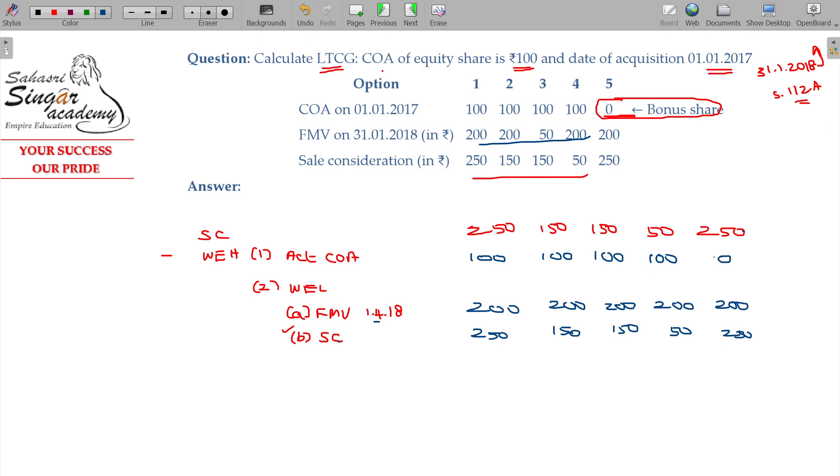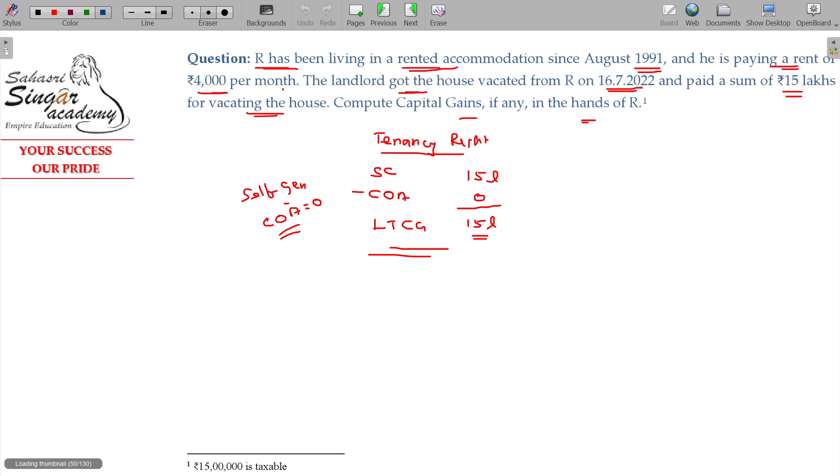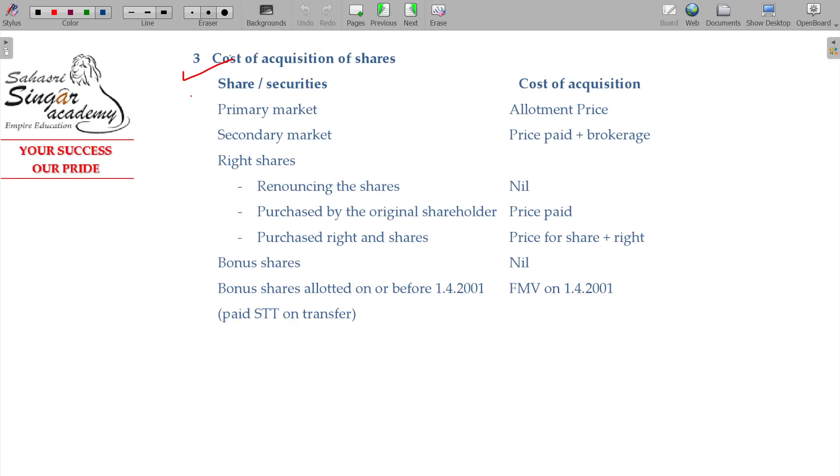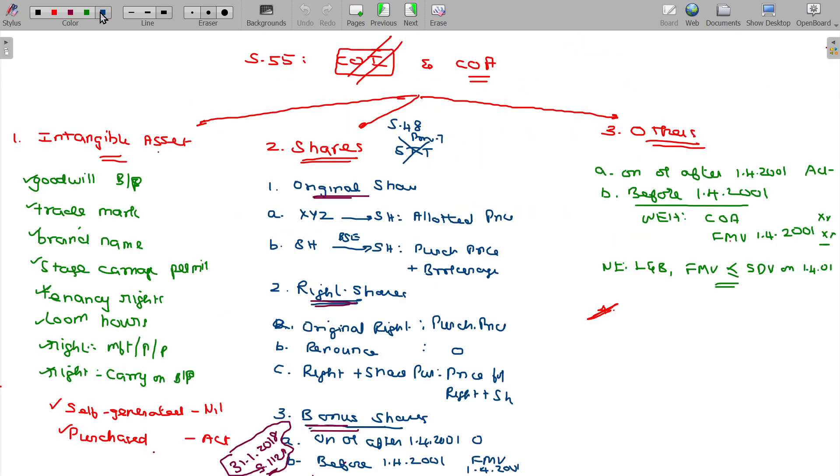And 250, in that case the cost of acquisition being zero, bonus share. Bonus share - if it's a bonus share, Section 112A is applicable if the share issued as bonus share issued before 31.01.2018. So recollect, on 31.01.2018 Section 112A applicable to the bonus share before this date, 31.01.2018.